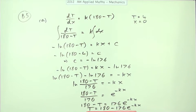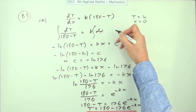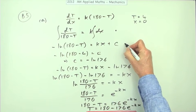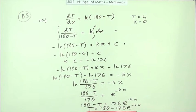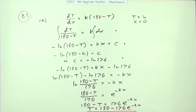The four marks were: one for separating the variables, one for integrating, one for finding the value of the constant, and one for all the rearrangement.